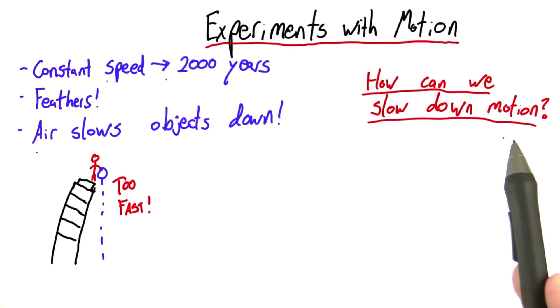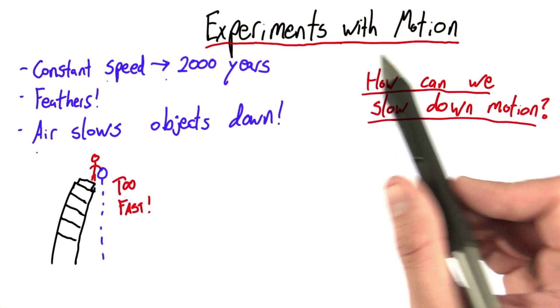Which brings up the question, how can we slow motion down? This seems like an essential aspect to doing any meaningful experiment with motion.